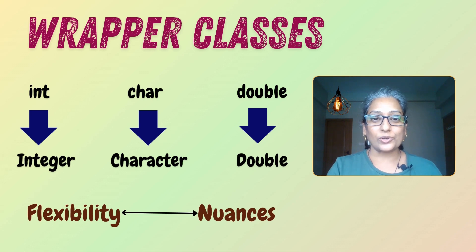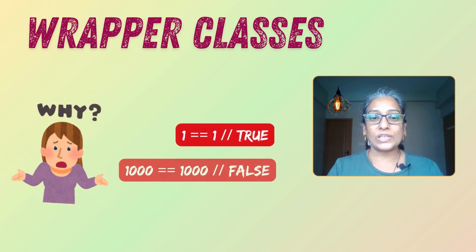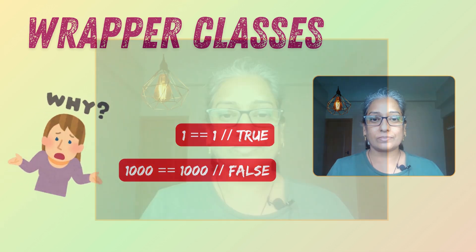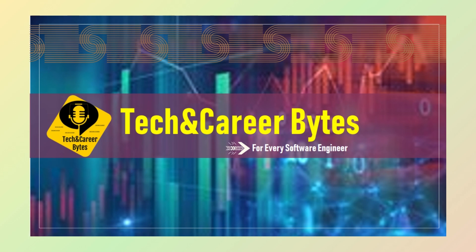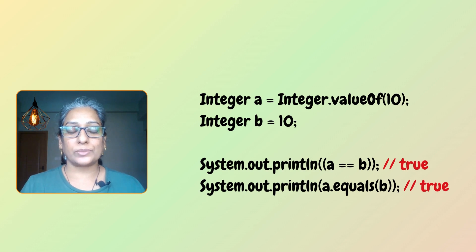In this video, let's explore one such subtlety: why does one equal to one evaluate to true, but thousand equal to thousand evaluate to false when dealing with integer objects? Welcome to Tech and Career Bytes. I'm a software professional with over two decades of experience, including seven years in leadership roles at a global product-based organization. Let's look at this example.